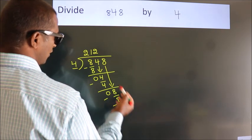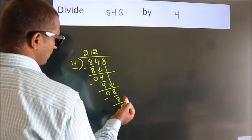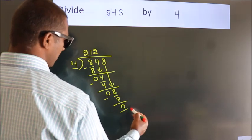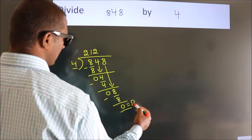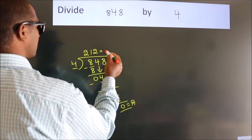After this, no more numbers to bring it down. So, we stop here. This is our remainder. This is our quotient.